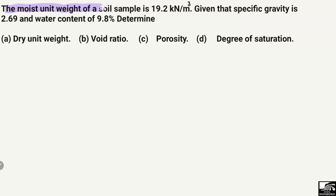The problem states that the moist unit weight of a soil sample is 19.2 kilonewton per cubic meter. The specific gravity is 2.69 and the water content of this soil sample is 9.8 percent. We have to find out the dry unit weight, void ratio, porosity, and the degree of saturation for this soil sample.